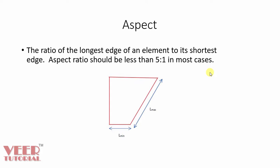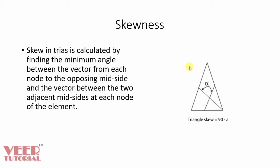Next is we have is the aspect ratio. So aspect ratio is the ratio of longest edge of the element to its shortest edge. Now let us consider we have an element like this, that is quad element. In this element, we have a side that is of maximum length and the second side is of minimum length. So the ratio of these sides is called aspect ratio. Generally in hypermesh, the aspect ratio up to 5:1 is allowed. And then we have skewness.